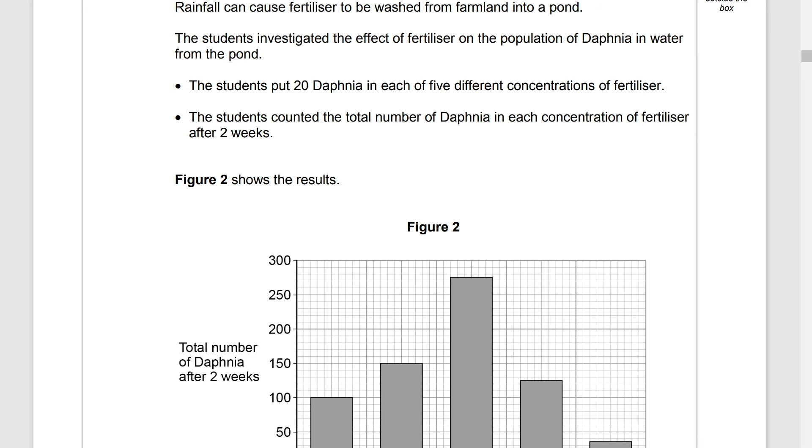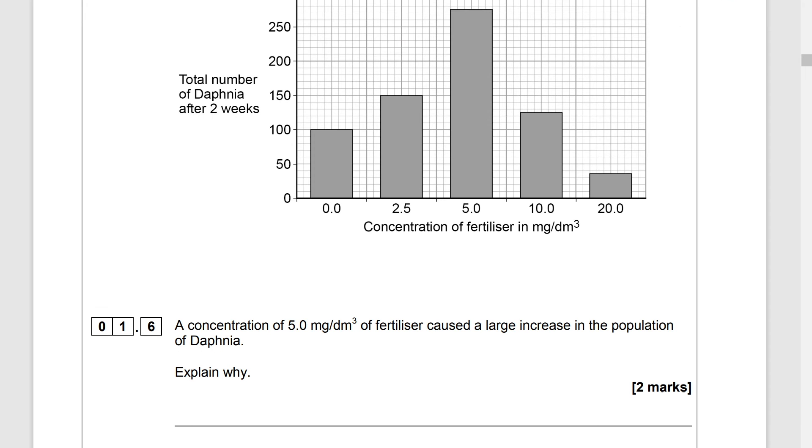Rainfall can cause fertiliser to be washed from farmland into a pond. The students investigated the effect of fertiliser on the population of Daphnia in water from the pond. The students put 20 Daphnia in each of the five different concentrations of fertiliser. The students counted the total number of Daphnia in each concentration of fertiliser after two weeks. Figure 2 shows the results and a concentration of five milligrams per decimetre cubed of fertiliser caused a large increase in the population of Daphnia. Explain why.